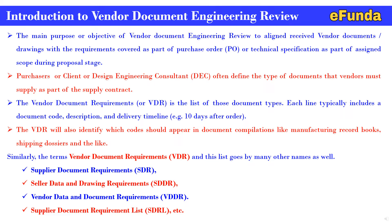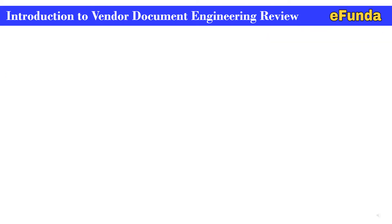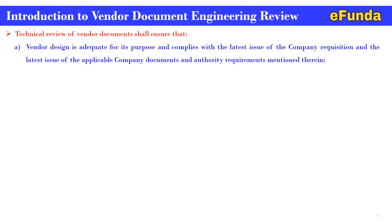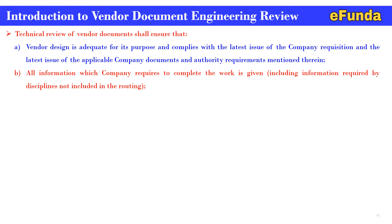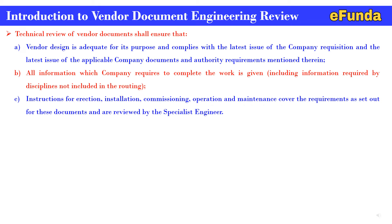Vendor document submission is covered in this video. The technical review of vendor documents shall ensure that the vendor design is adequate for its purpose and complies with the latest issue of the company requisition, applicable company documents, and authority requirements mentioned in the specification. It also ensures that all information the company requires to complete the work is given, including information required by disciplines not included in the routine, and that instructions for erection, installation, commissioning, operation, and maintenance cover the requirements.